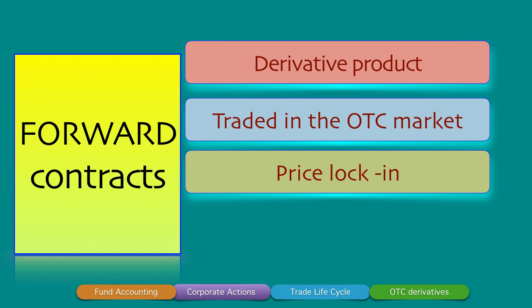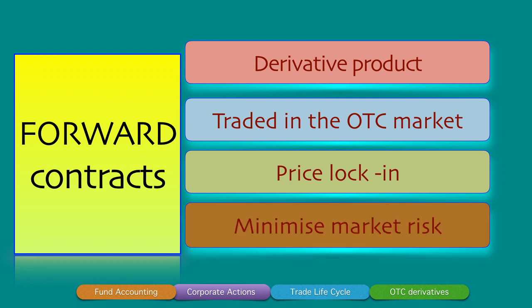The only difference between a forward contract and a futures contract is that a forward contract is OTC in nature, whereas a futures contract is traded on the exchange. This price lock-in enables both counterparties to minimize market risk. Market risk is the risk that the price of the asset moves in a direction contrary to your trading position. So if a bank holds a long position in USD/JPY and prices start falling, the bank loses money — that is market risk.